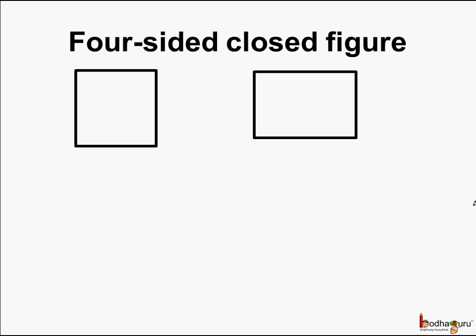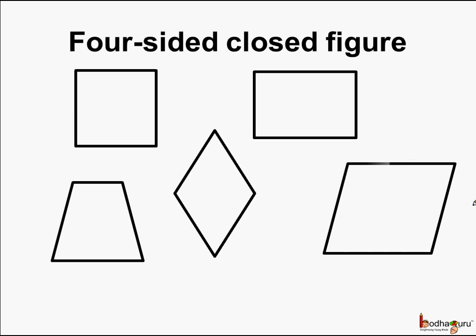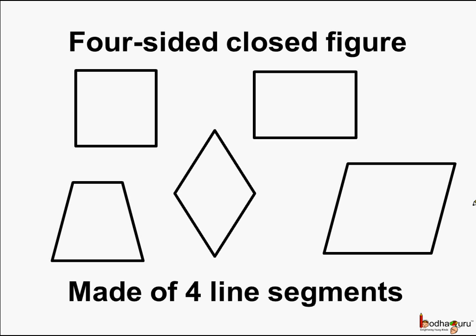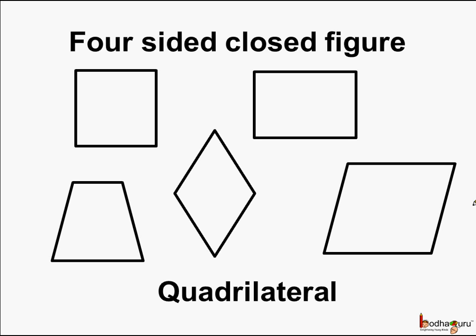Other than these, this is also a four-sided closed figure. This figure and this figure. And what do we see? Each of these closed figures is made of four line segments. Such four-sided closed figures which are made of line segments are called quadrilaterals.